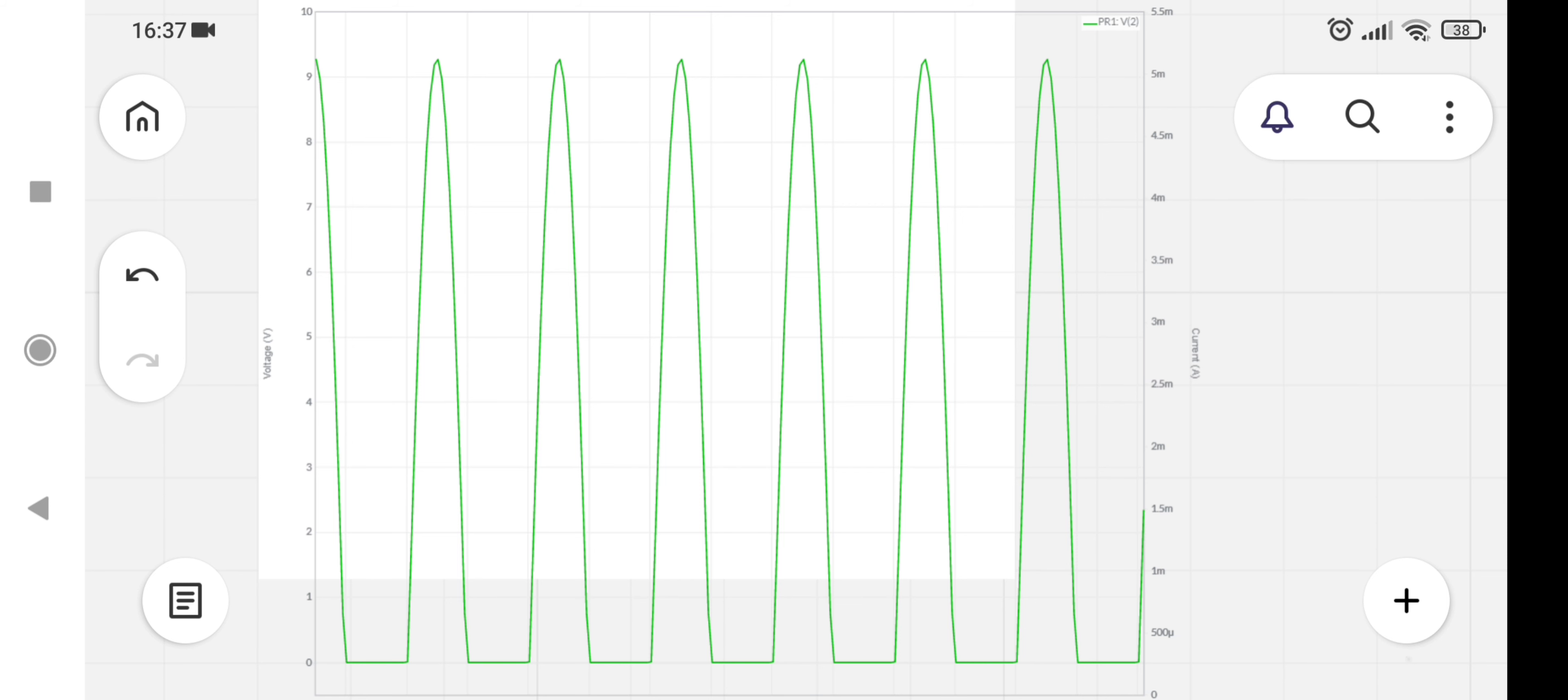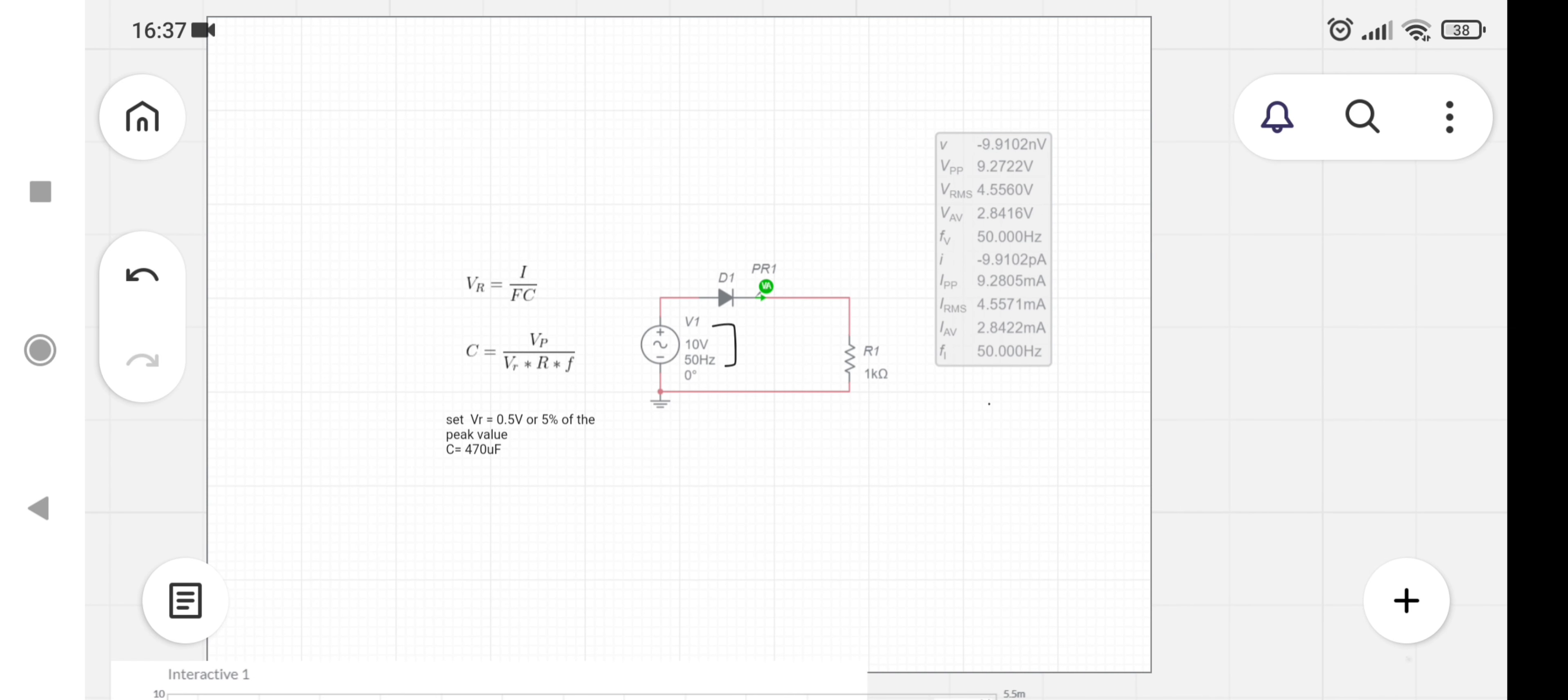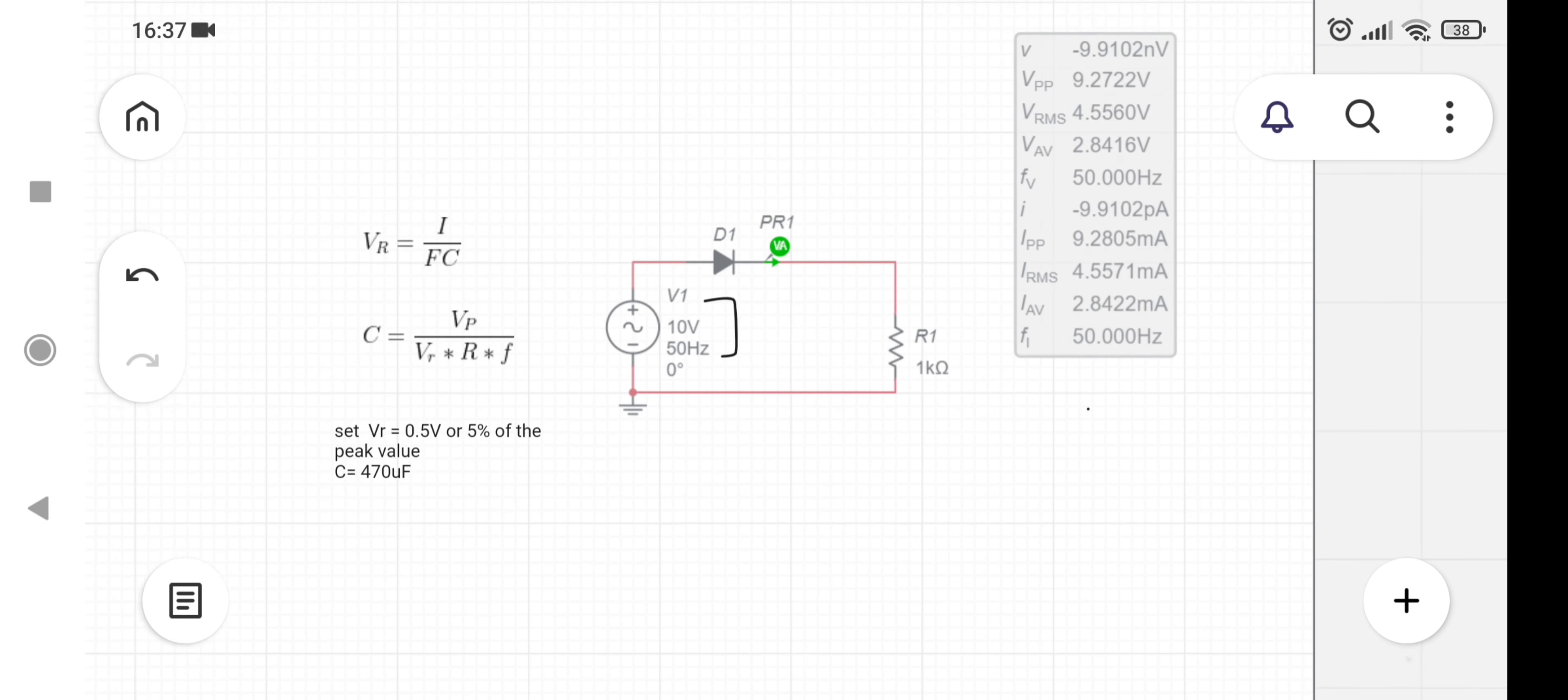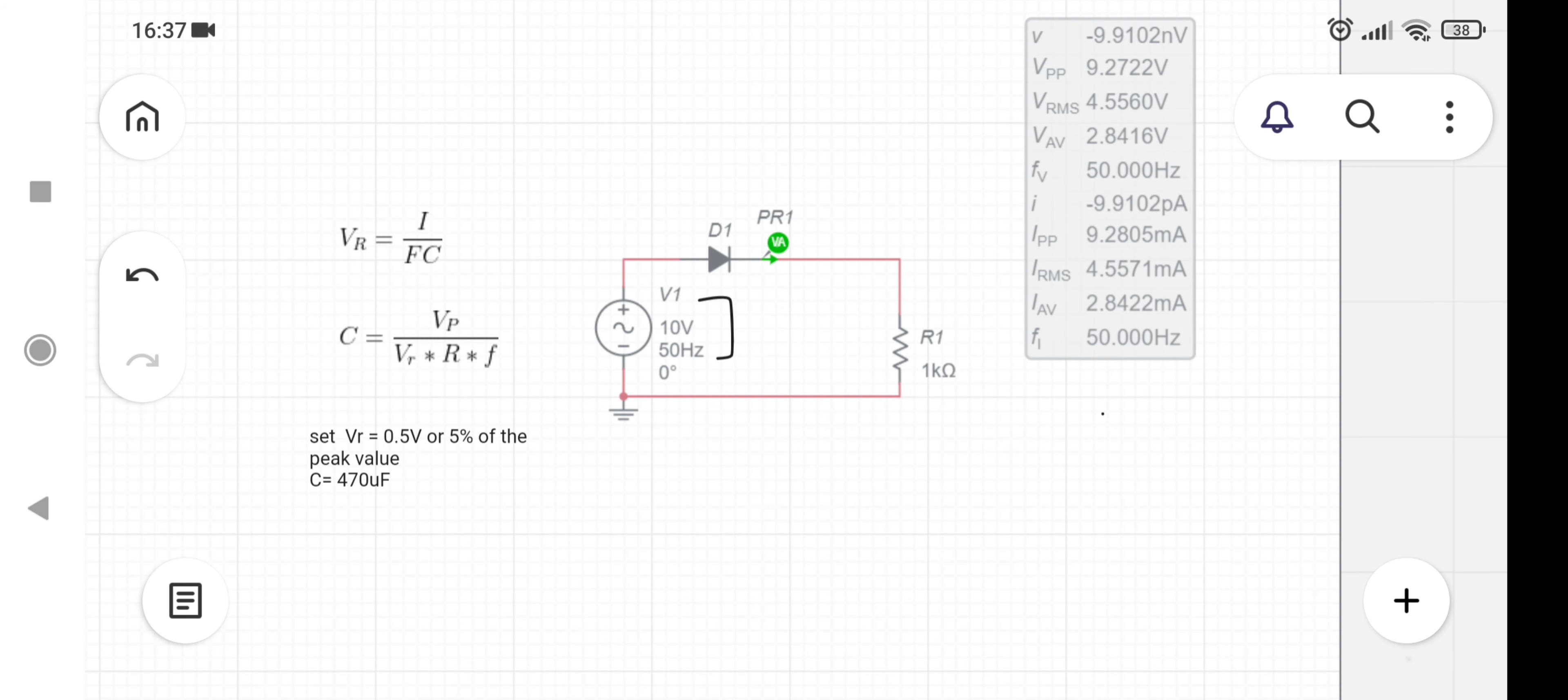This process is called rectification. The next step is to select a capacitor value and how to calculate its value. You can see there are formulas for this.